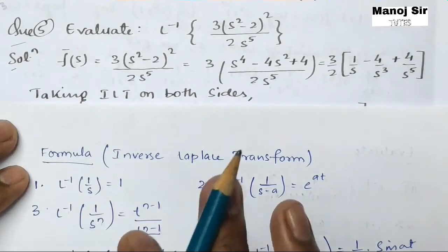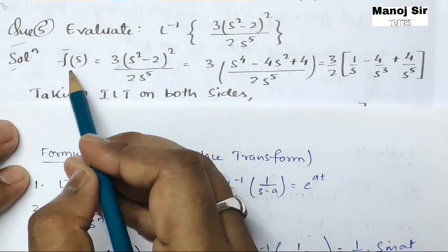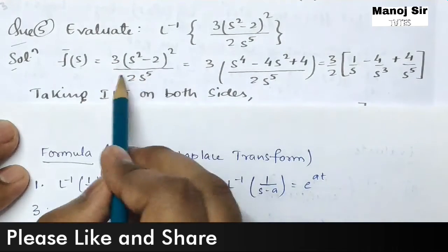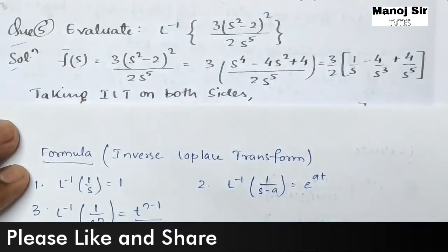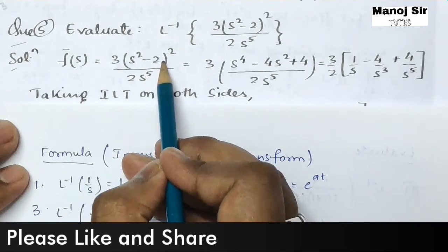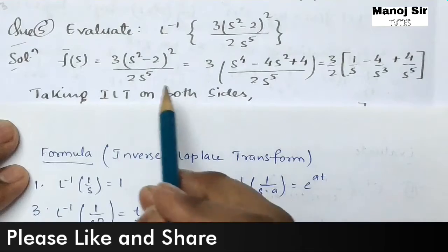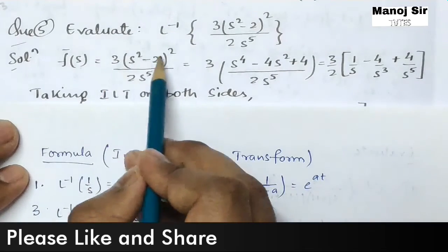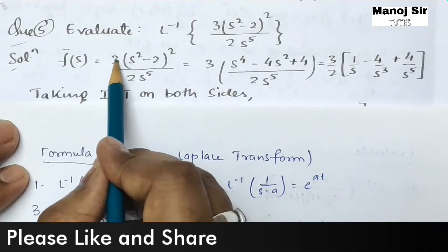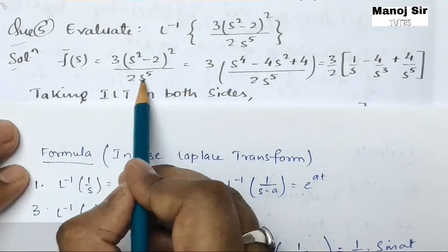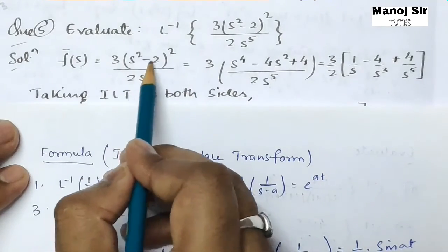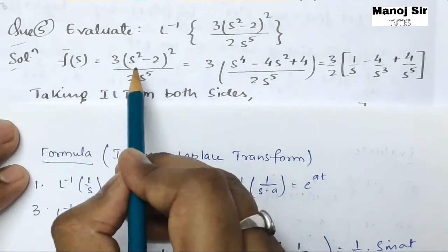Let us start solving this problem. We have f̄(s) = 3(s² − 2)² / (2s⁵). We are going to apply the (a − b)² formula to expand the numerator, so that we can simplify this expression. Rewriting, we have 3/(2s⁵) multiplied by (s²)² ...